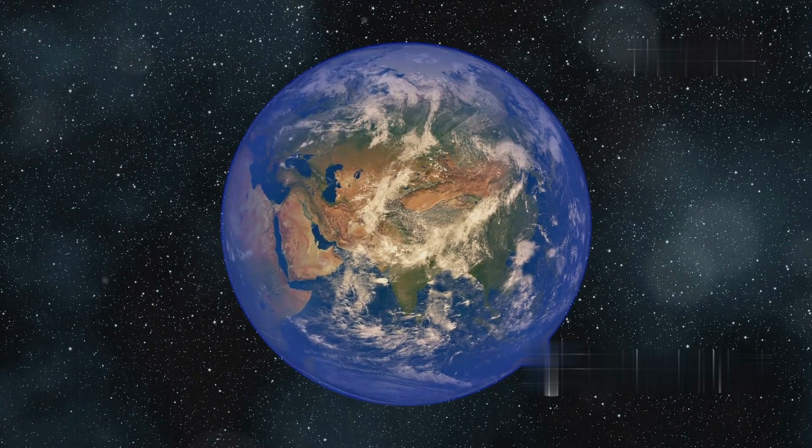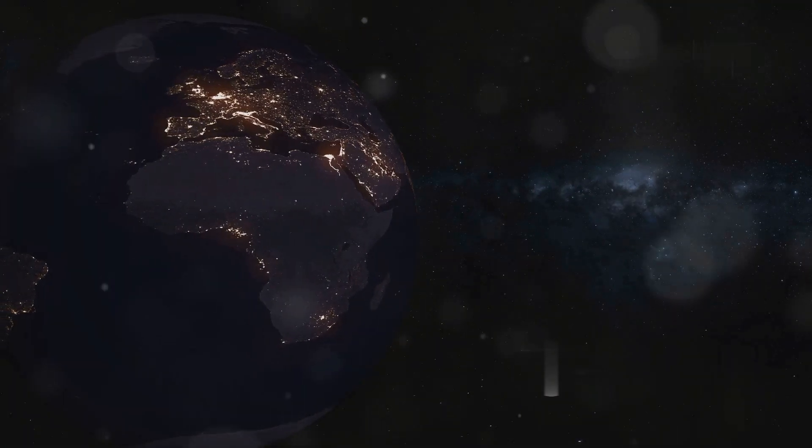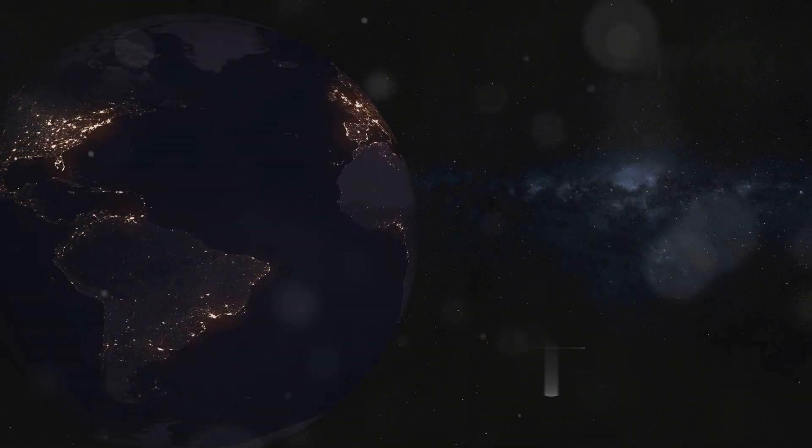Our journey brings us closer to a familiar blue and green sphere. This is Earth, our home, a tiny oasis in the cosmic desert. As we descend, familiar landmarks emerge, continents, swirling clouds, and city lights. We transition from the incomprehensible scale of the cosmos to the more relatable scale of our planet.